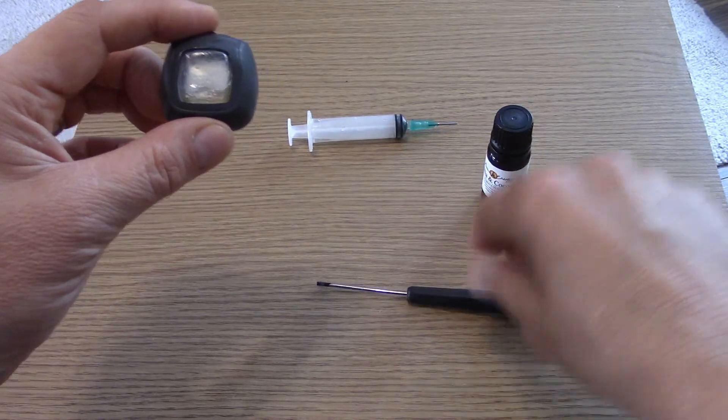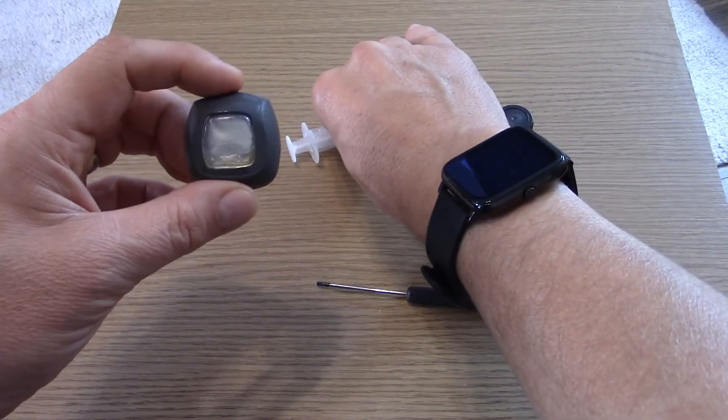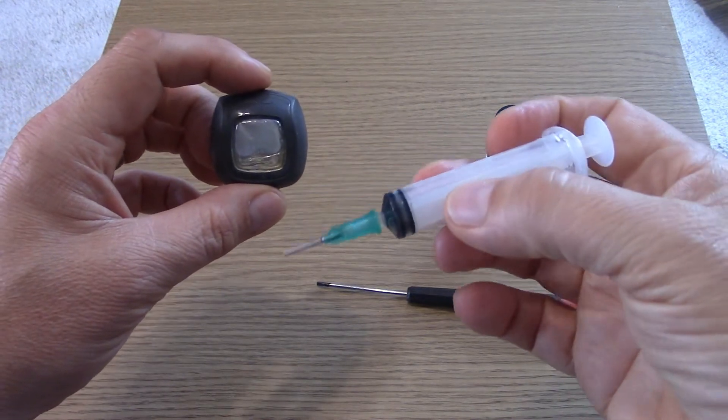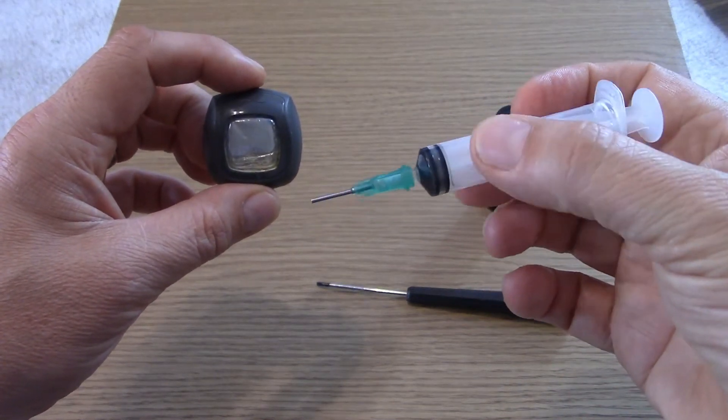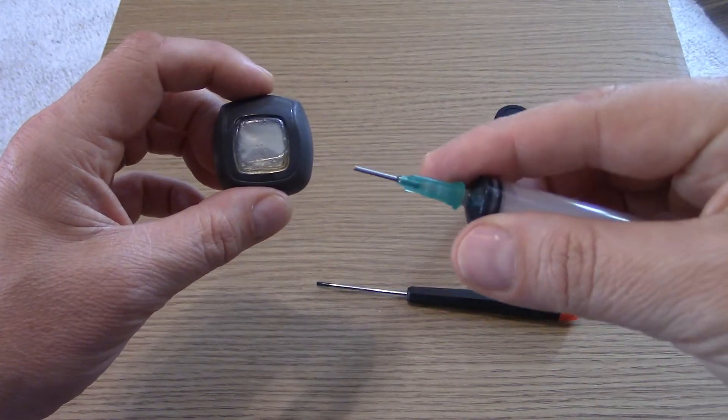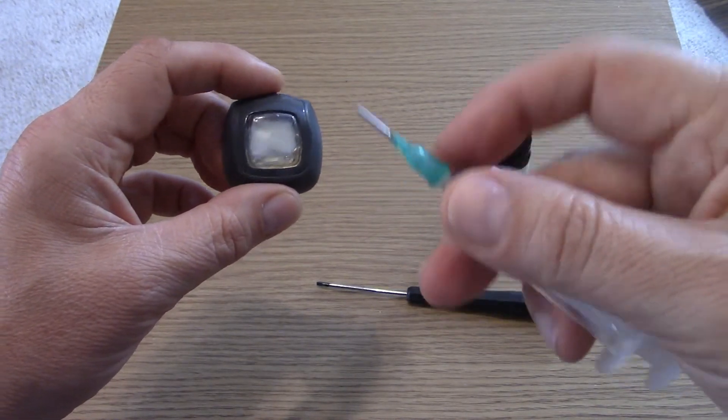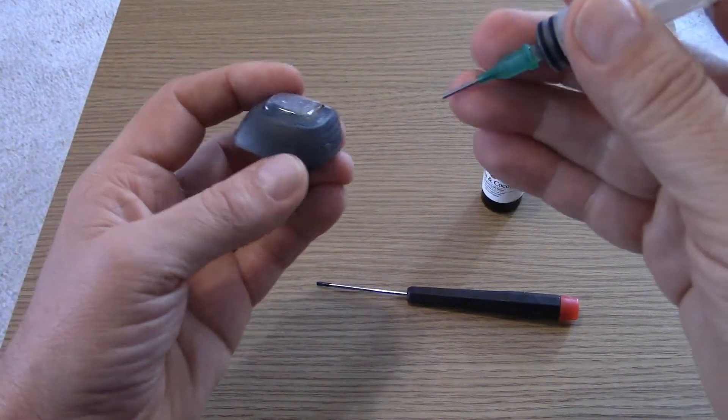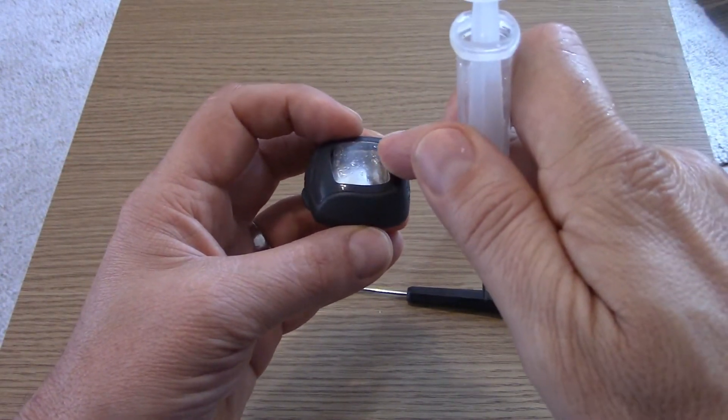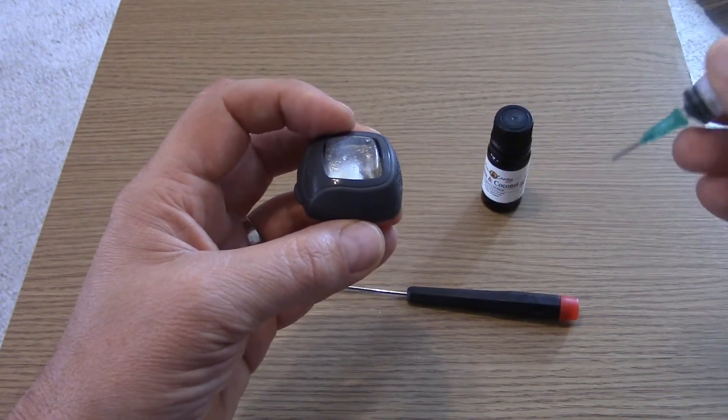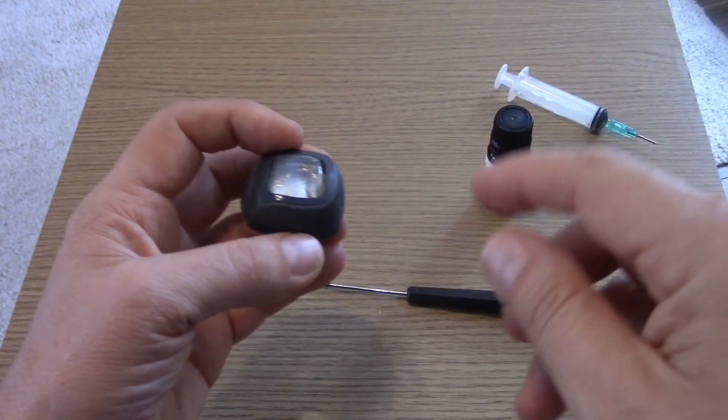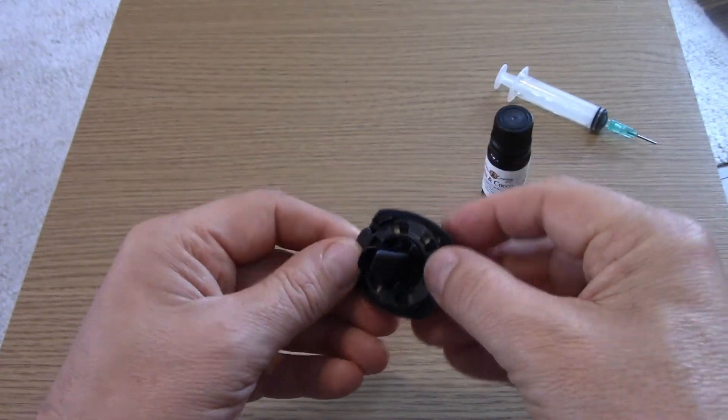What you'll need for this is a screwdriver, essential oil, one old used Febreze air freshener, and a syringe with a blunt tip needle on the end. The principle is that we're going to use this to puncture the bubble here and put some oil mixture with water back into here.